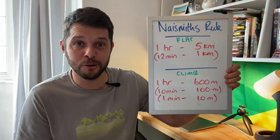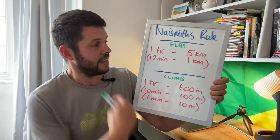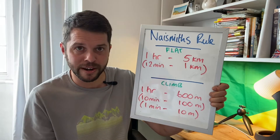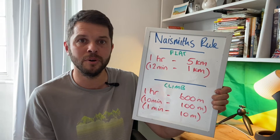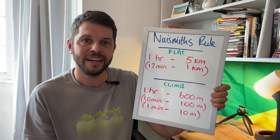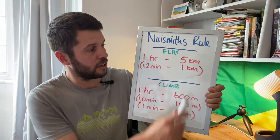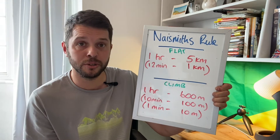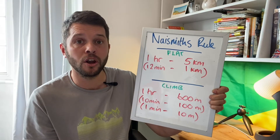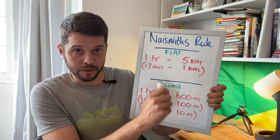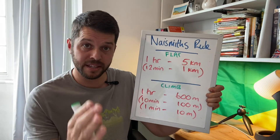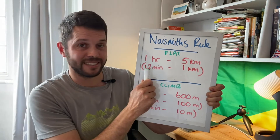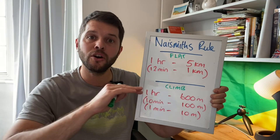What I've done here is write all this down to make things a bit easier to understand. On flat ground, somebody with an average level of fitness walking at an average pace, it's going to take one hour to walk five kilometres. Breaking this down further, that equates to 12 minutes to walk one kilometre. This is important because on your maps, from one grid line to the next is one kilometre — so crossing one grid square on flat ground takes 12 minutes on average.